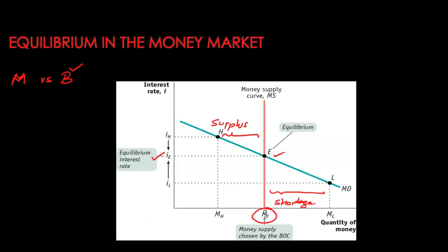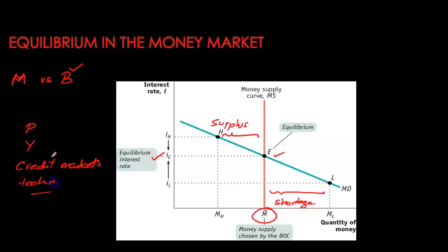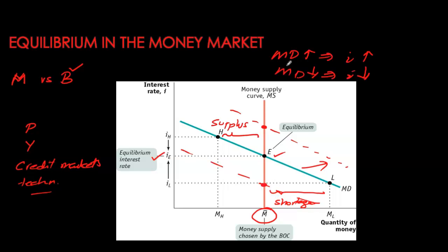For given demand and supply, excess supply or excess demand will always eliminate itself and the market converges to the equilibrium interest rate. Fluctuations in interest rates arise when the supply or demand curve shifts. Money demand can fluctuate due to prices, real GDP, credit markets, and technology. A higher money demand pushes interest rates up; a lower money demand pulls interest rates down — so money demand shifters create volatility in interest rates.